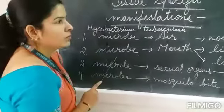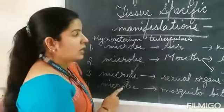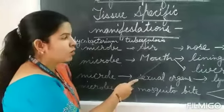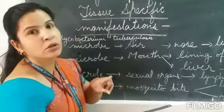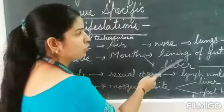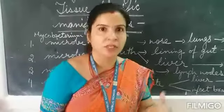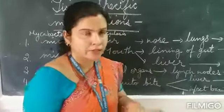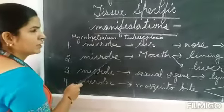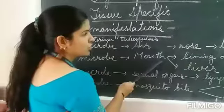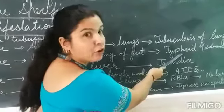After that, suppose Salmonella typhi, which is also a bacterium — if it enters through the mouth, then there are two targets, two organs. It can go through the inner lining of the gut — the gut, which is the intestine or stomach, where food enters. Or it can also target the liver. Salmonella typhi enters through the mouth, infects the gut, and causes typhoid disease.